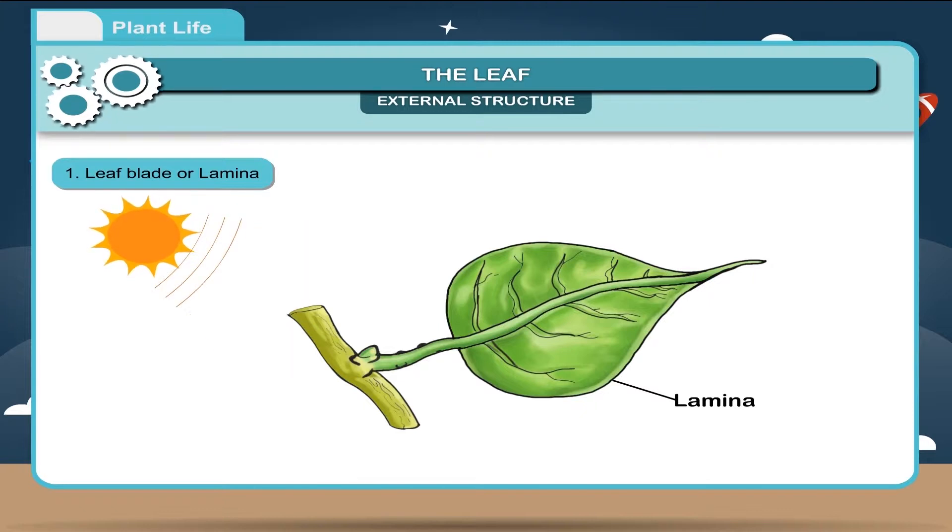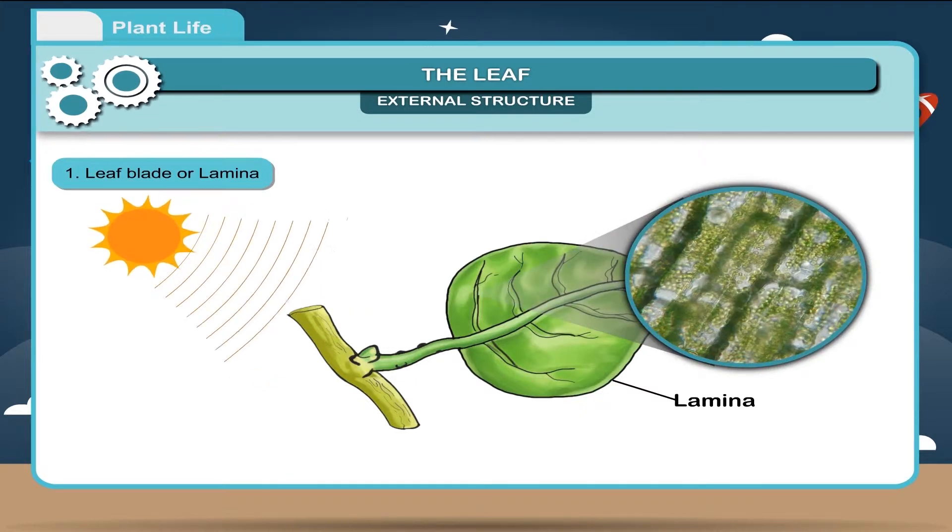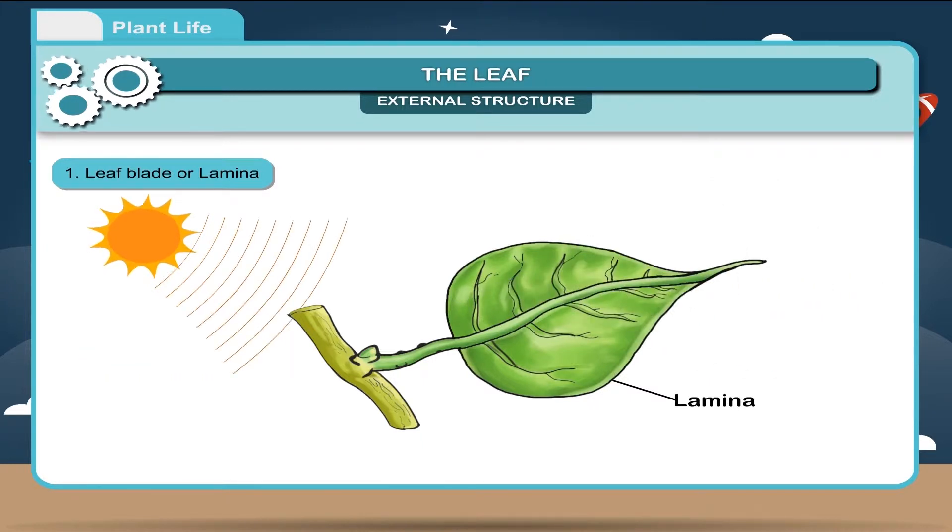It contains green pigment, the chlorophyll which is essential for photosynthesis. The leaf blade has a network of veins which are further divided into fine veins called veinlets. Veins conduct water to the leaves and transport prepared food from the leaves to the other parts of the plant.